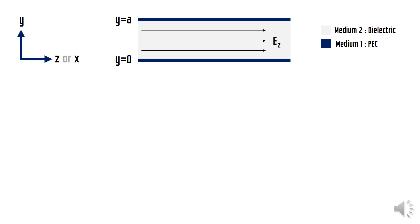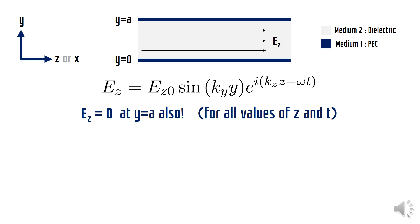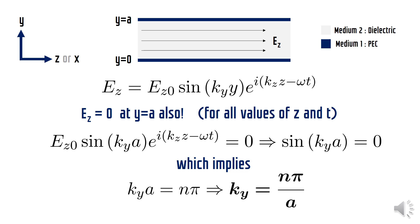Now going back to the expression of Ez that we derived previously, we can see that Ez should be zero at y equals A also in order to maintain the boundary conditions at that interface. Putting this condition in the expression, we find that sin(kyA) should be zero, which implies that kyA should be an integral multiple of pi.